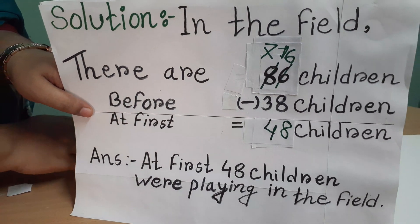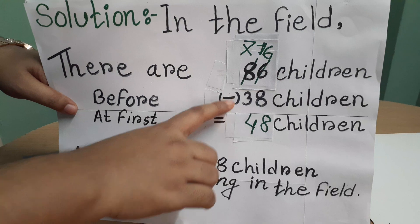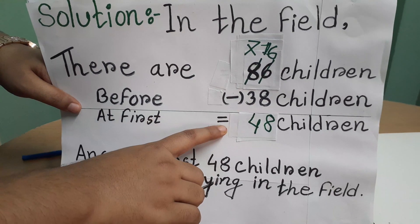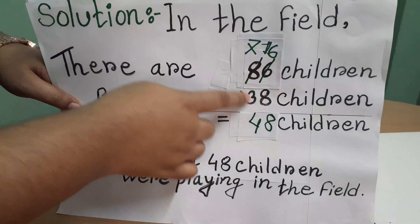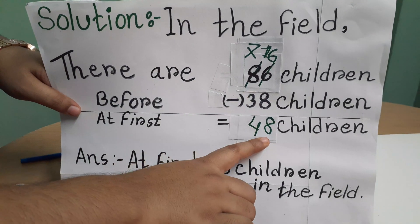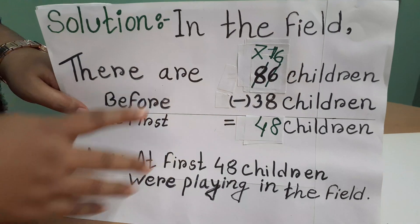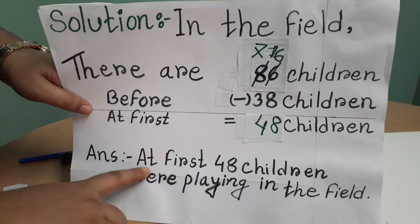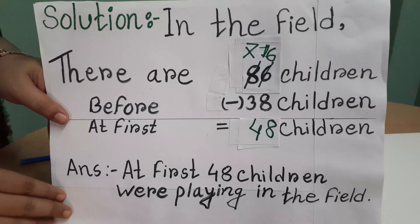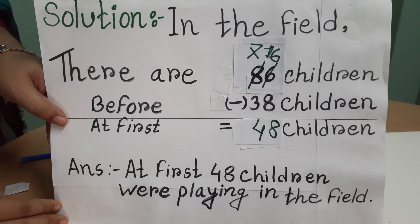So at first, we are getting 48 children. You will write 'at first', then give the equal sign under the sign — plus or minus, whatever the sign is — under the sign. And remember always, when you are writing the digit, your digit will always be under the digit. I have got 48, so at first 48 children were there. Only the answer writing is left. Answer: at first 48 children were playing in the field. Students, please write it in your CW copy. Our problem number 5 has been done.